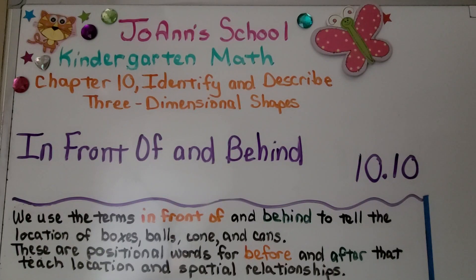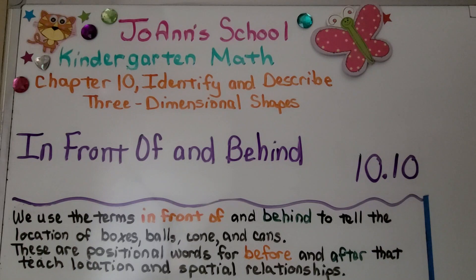Lesson 10.10: In Front Of and Behind. We use the terms 'in front of' and 'behind' to tell the location of boxes, balls, cones, and cans. These are positional words that teach location and spatial relationships.